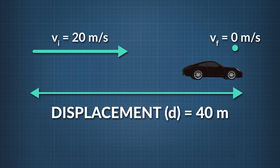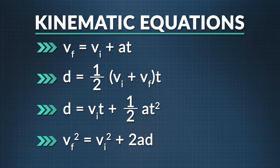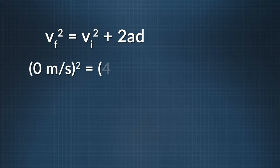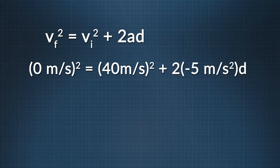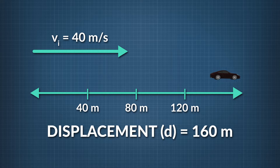What would happen to the stopping displacement if the initial velocity was doubled and the rate of deceleration remained the same? The stopping displacement at 20 meters per second was 40 meters. With an initial velocity now of 40 meters per second, the driver applies the brakes at the same spot and decelerates at the same rate of negative 5 meters per second squared. Working through the fourth kinematic equation, we find the stopping distance is 160 meters — more than three times what it was before. As initial velocity increased, so did the stopping displacement.